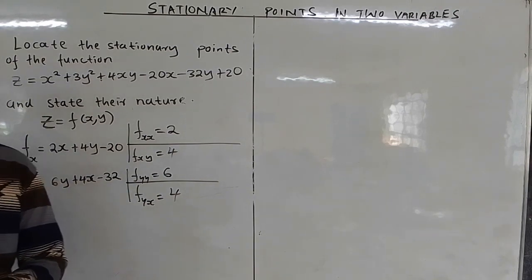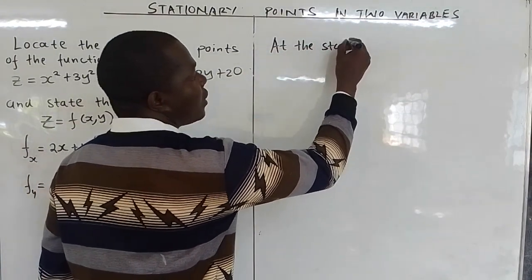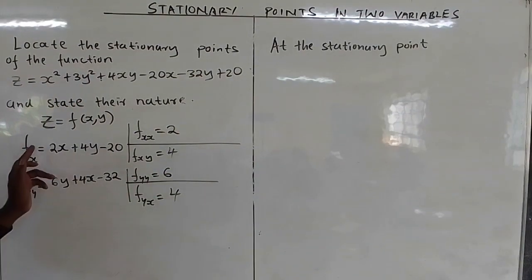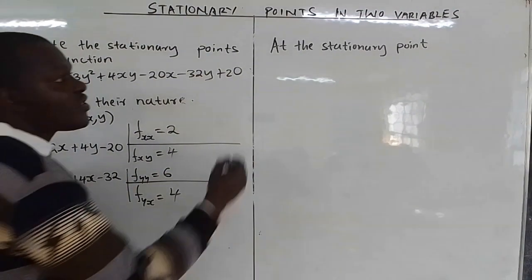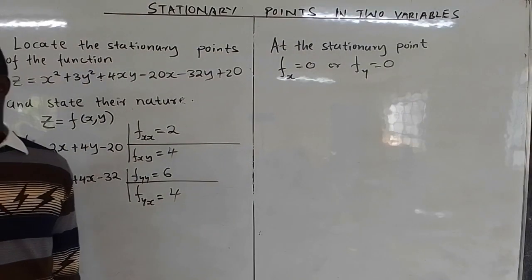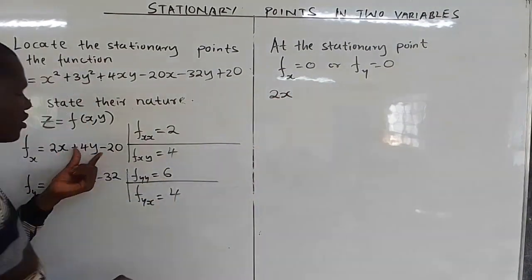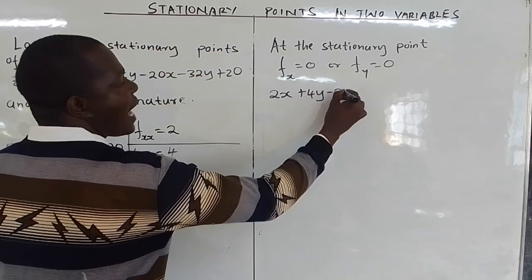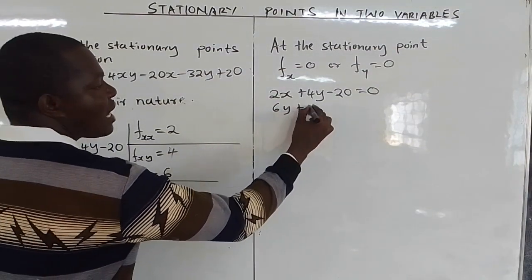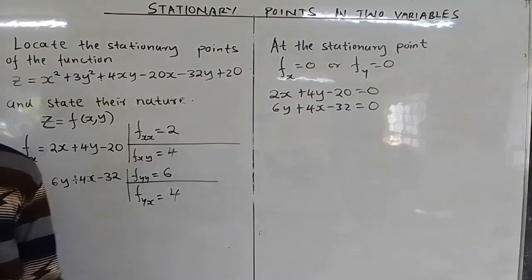Having found all four partial derivatives, we now find the stationary point. At a stationary point, the derivative is zero. With two variables, both partial derivatives must equal zero: so ∂z/∂x = 2x + 4y - 20 = 0, and ∂z/∂y = 4x + 6y - 32 = 0.